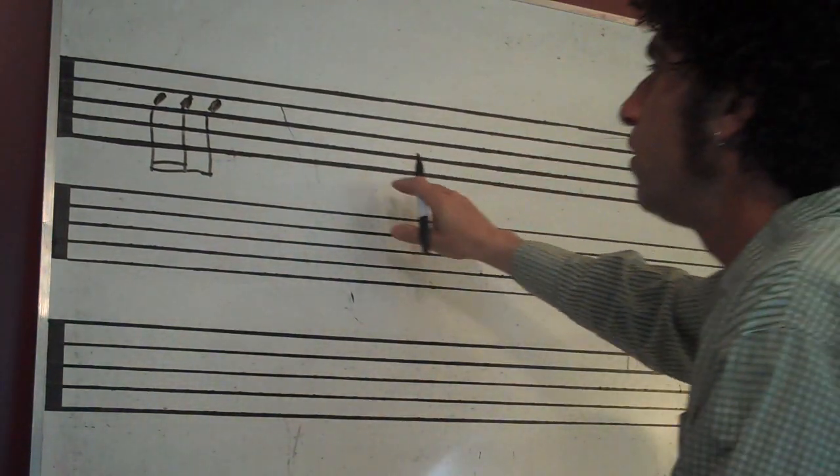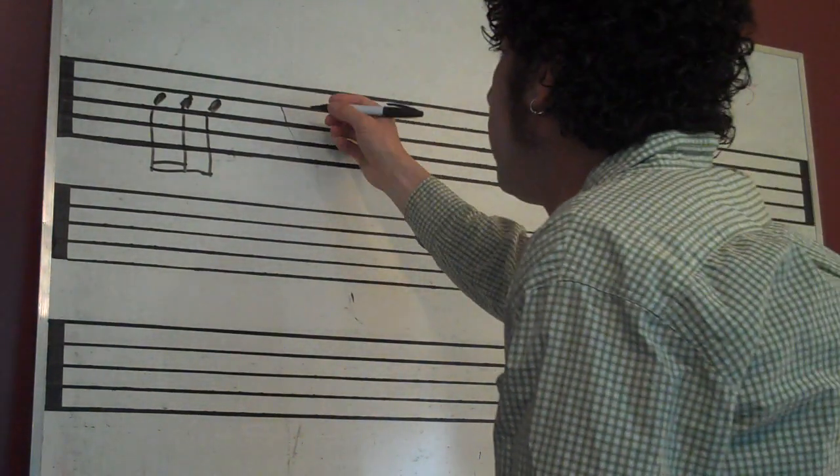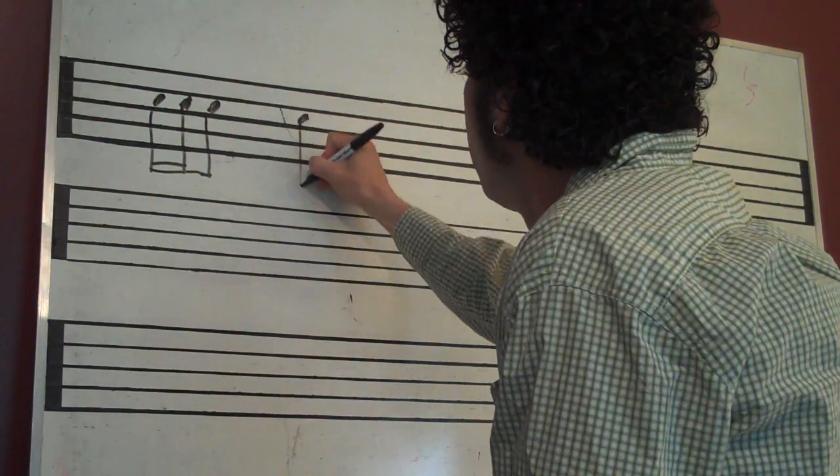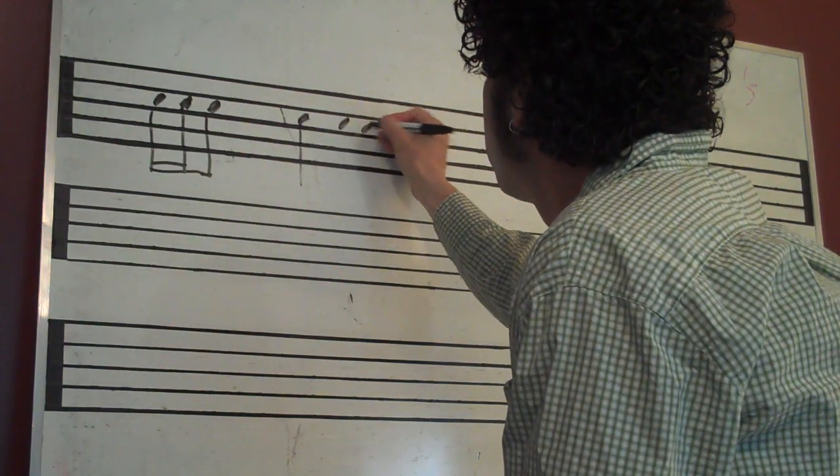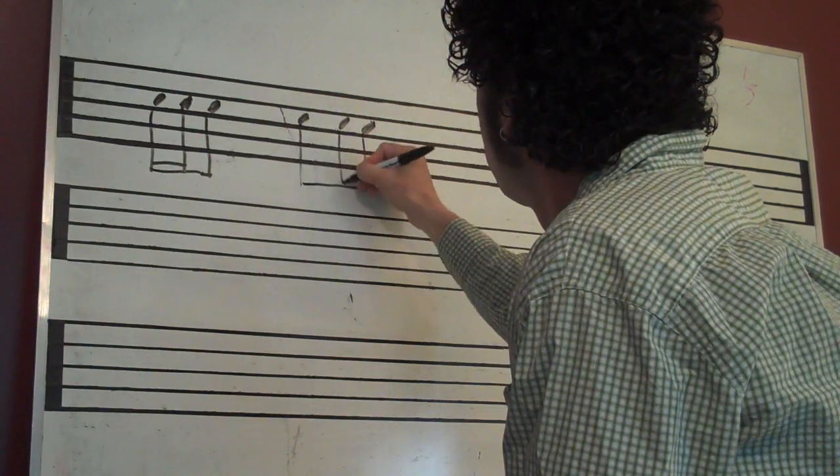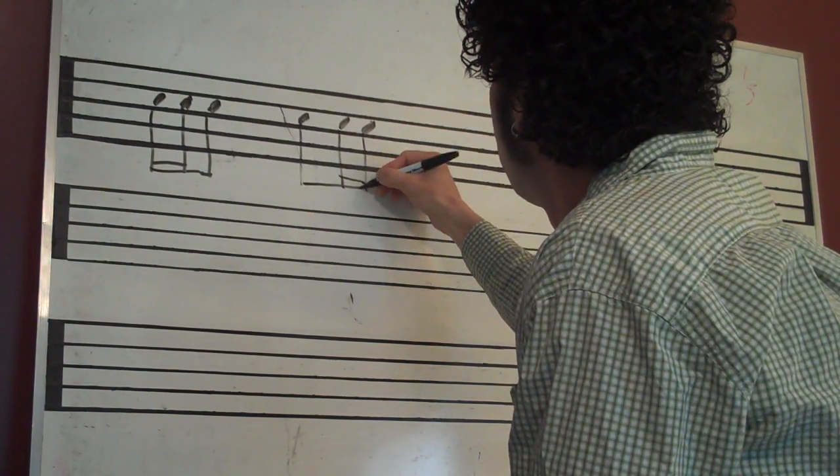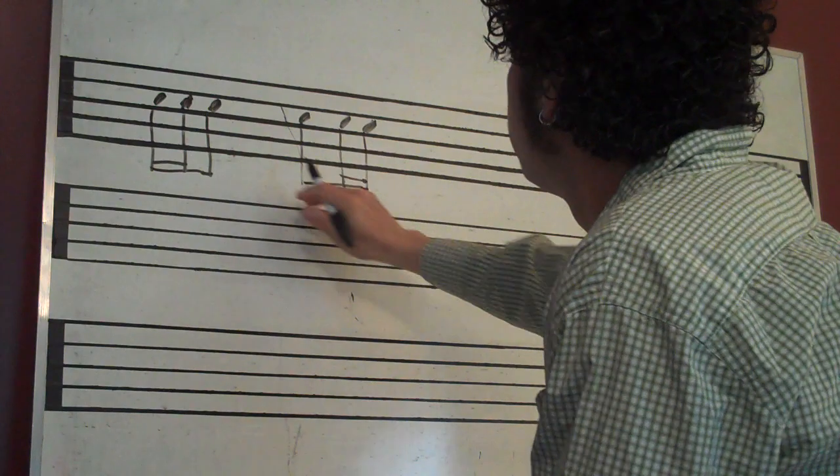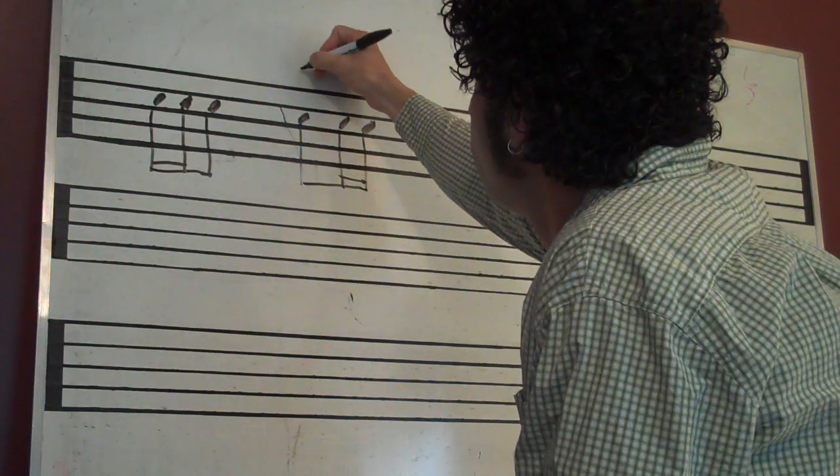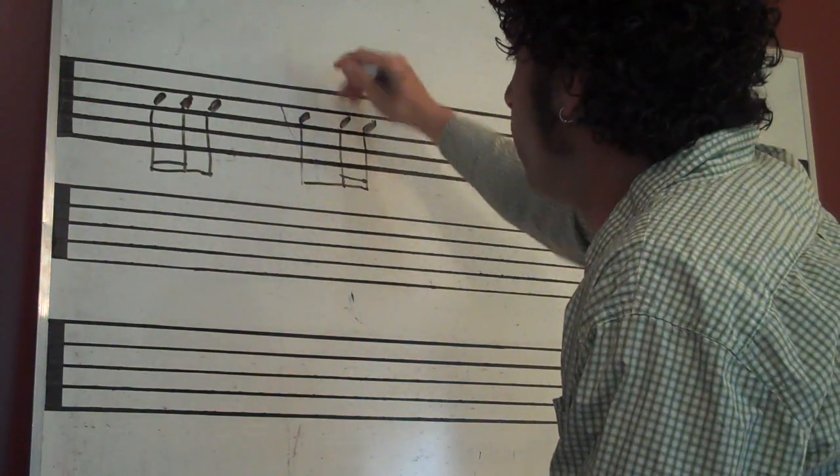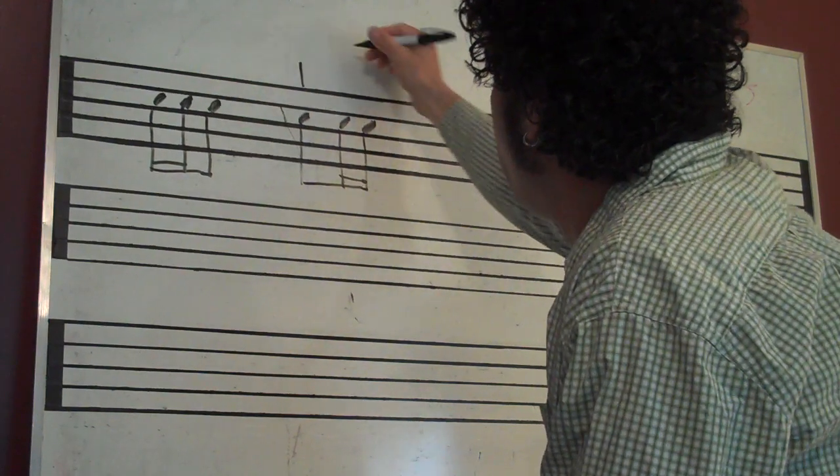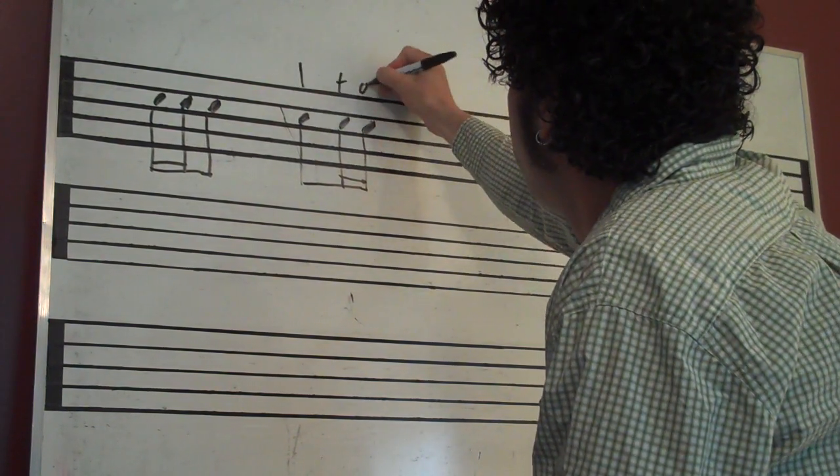Okay, so in the previous videos we were counting this rhythm, an eighth note followed by two sixteenths. So it would be, if this was the one, this would be one and a, right?